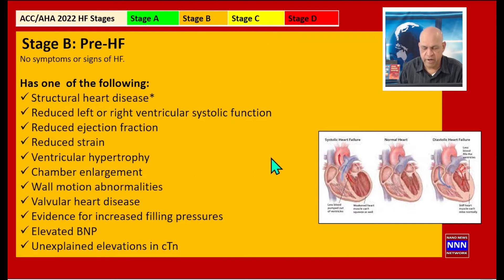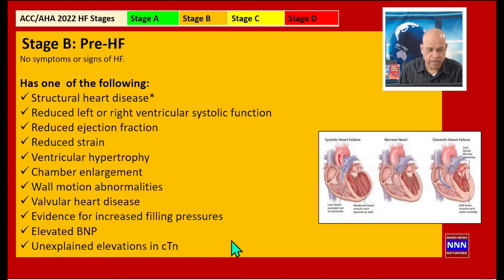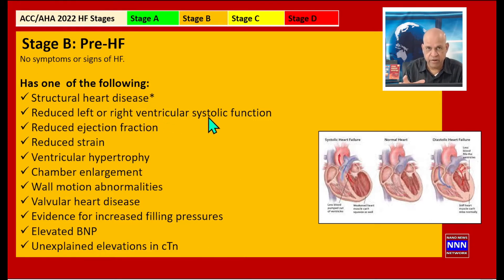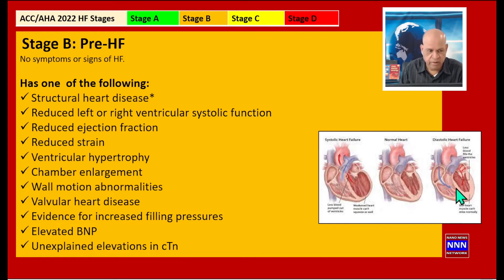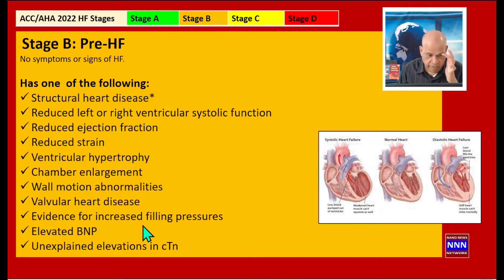Stage B is the pre-heart failure stage. These patients do not have any symptoms, but looking at the long list of findings, you realize they are already having some structural changes in the heart and cardiovascular system. There is reduced right or left ventricular systolic function as reflected in the ejection fraction, detectable strain on echocardiography, left ventricular hypertrophy, cardiac enlargement, and wall motion abnormalities related to coronary artery disease or infiltrative cardiomyopathies.